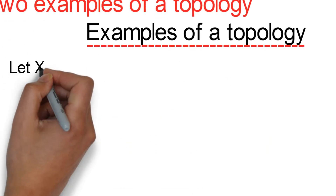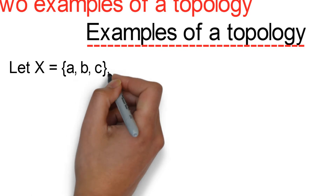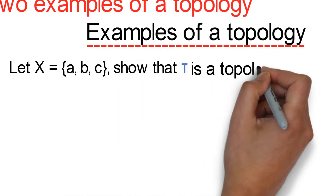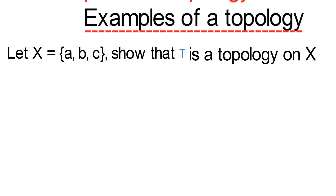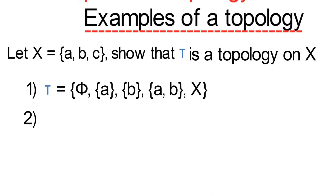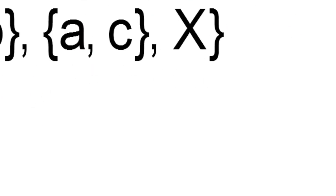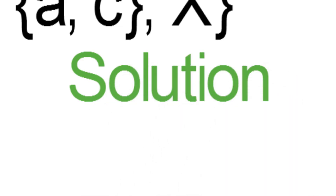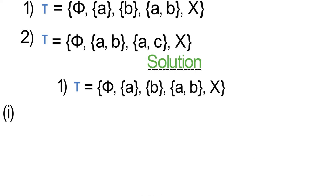We let X be equal to the set {a, b, c}. Now, to show that tau is a topology on X, we have two questions: tau being equal to the first set, and tau being equal to the second set for number 2. We start by solving question 1.